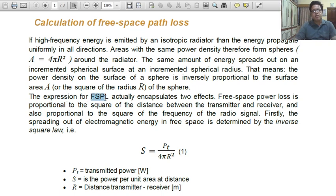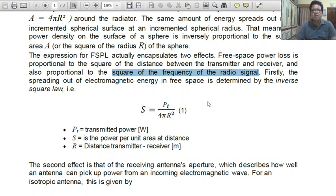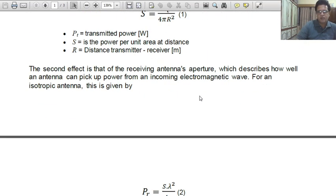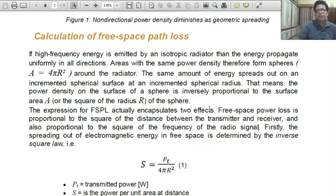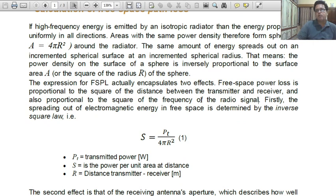The expression for FSPL actually encapsulates two effects. Free space power loss is proportional to the square of the distance between the transmitter and the receiver. And also proportional to the square of the frequency of the radio signal. Free space power loss have two effects. One is distance between the transmitter and the receiver, and it is proportional to the square of the distance. And second one is that is proportional to the square of the frequency of the radio signal.